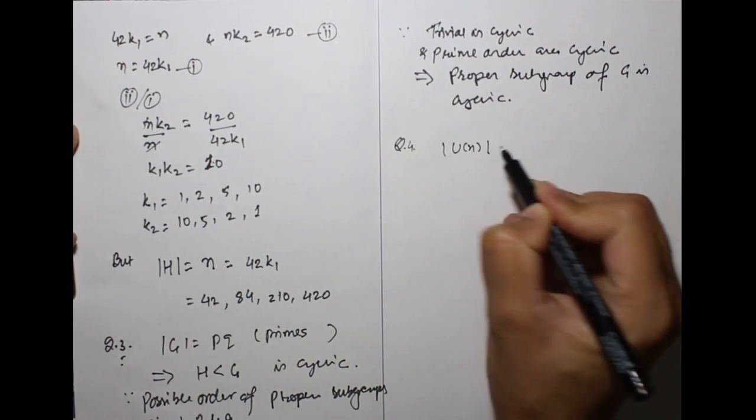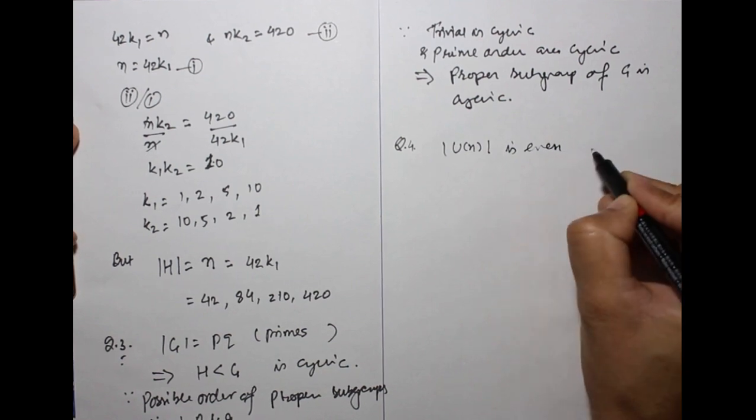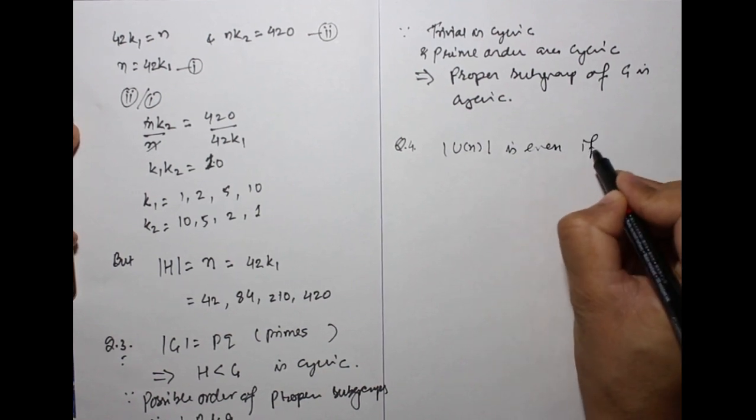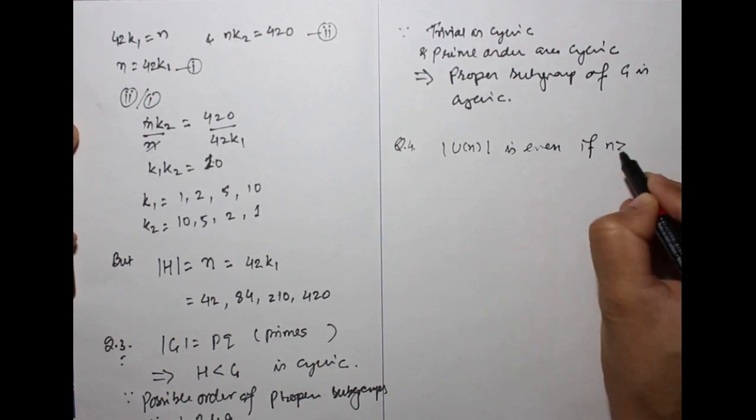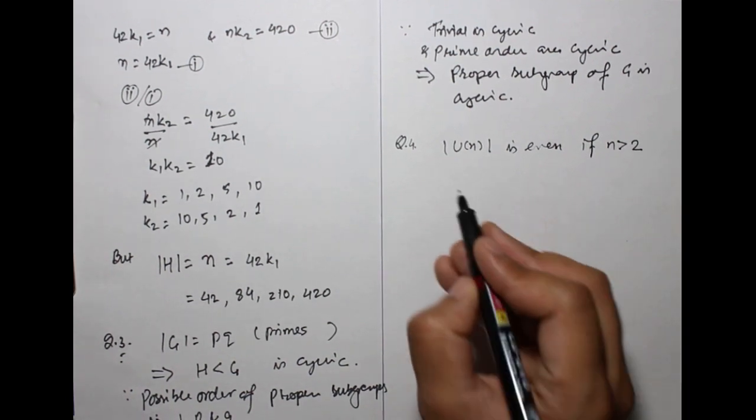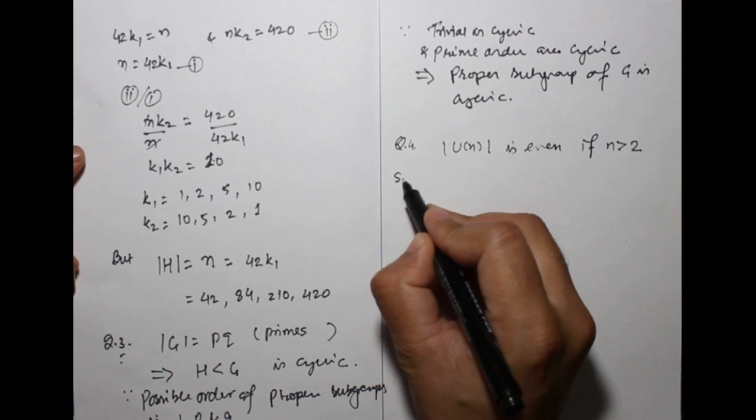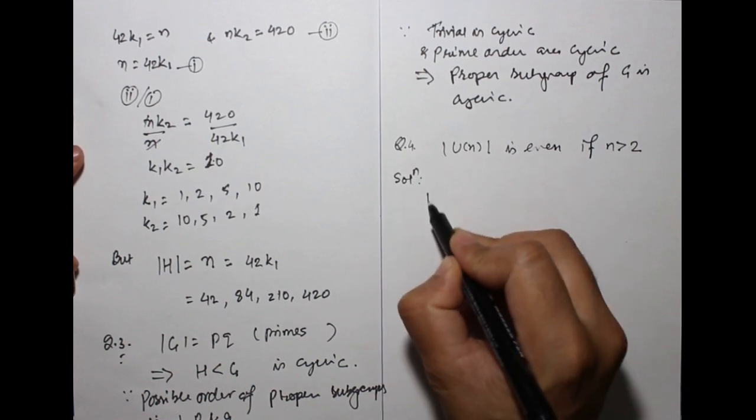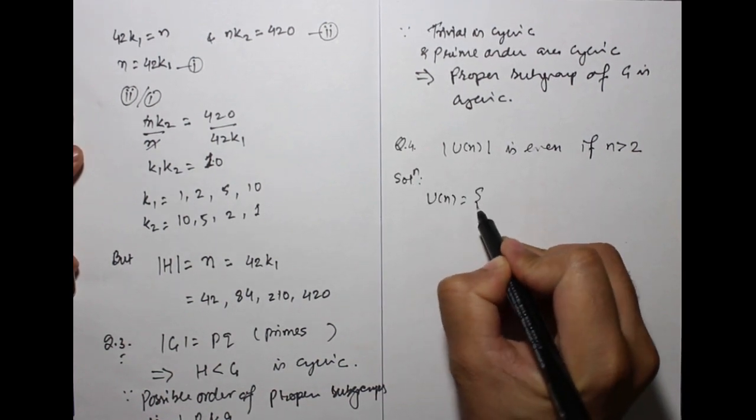Next: Order of U_n is even if n is strictly greater than 2. We know U_n is...